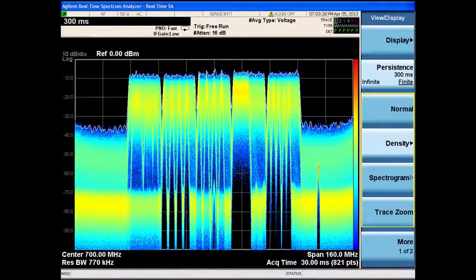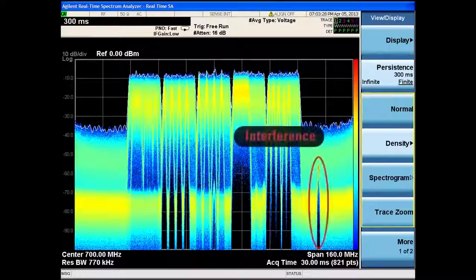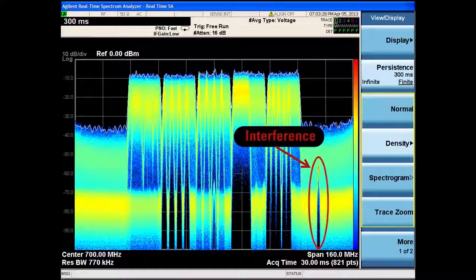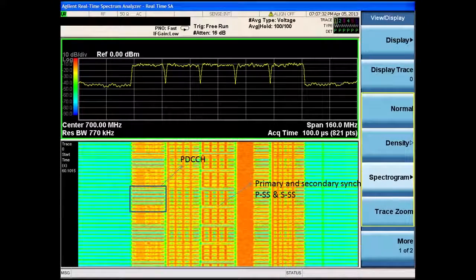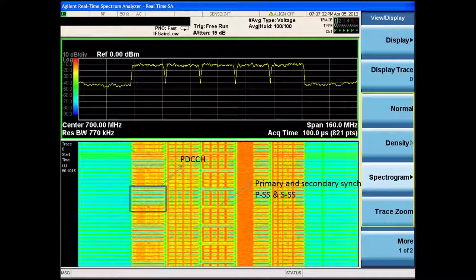In this carrier aggregation signal, the display clearly shows lower-level interference. This could be either in-band or out-of-band. Using just the real-time spectrogram, you can identify many signal characteristics without even demodulating the waveform.